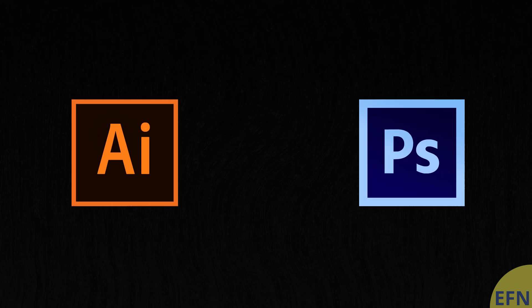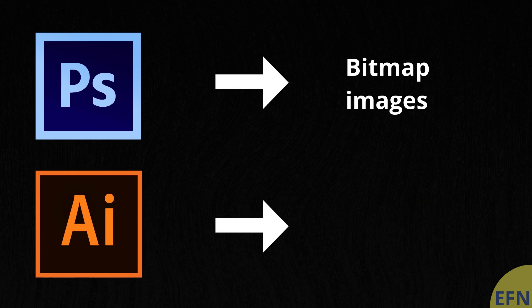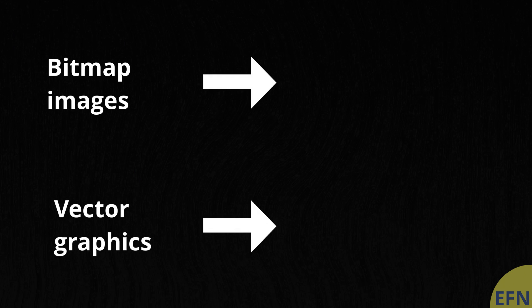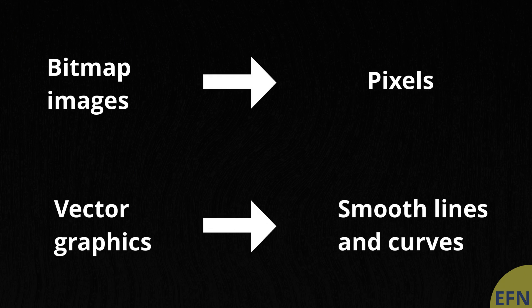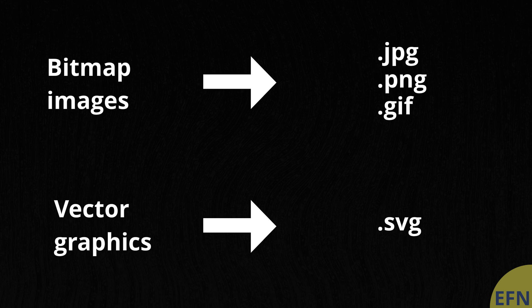We'll start by going over the most fundamental difference between the two, which is which type of image they're meant for editing. Photoshop is for editing bitmap images, whereas Illustrator is for editing vector graphics. Bitmap images are made of pixels, and vector graphics are made of smooth lines and curves. Bitmap images will have the file extension of .jpg, .png, or .gif, where a vector graphic will have a .svg on it.